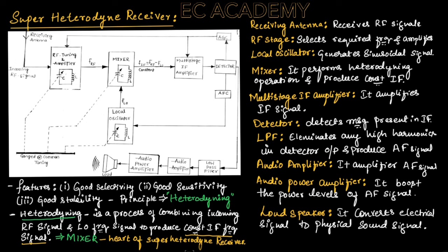The Super Heterodyne Receiver consists of different components shown here. It has a receiving antenna that receives the radio frequencies. These RF signals might be AM signals or FM signals. These incoming RF signals are given as input to the RF tuning and amplifier circuit, which is the RF stage.